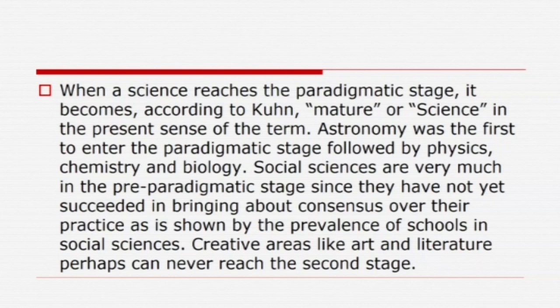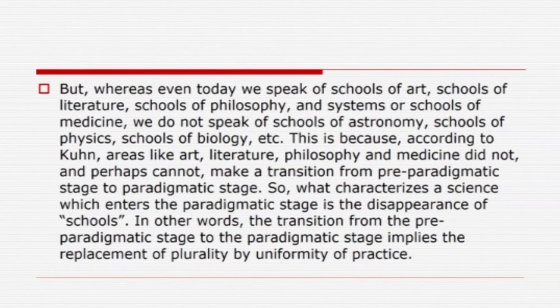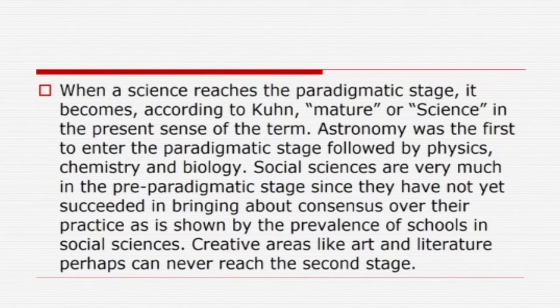Which discipline was the first to make a transition from the pre-paradigmatic stage to the paradigmatic stage? Astronomy was the first to enter the paradigmatic stage, followed by physics, then chemistry, and then biology. Social sciences — including sociology — Kuhn also suggested that social sciences are very much in the pre-paradigmatic stage, since they have not yet succeeded in bringing about consensus over their practice, as shown by the prevalence of schools in social sciences.